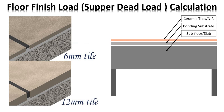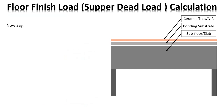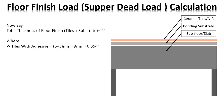Tiles can be used in different thicknesses, and different types of tiles are available. The total thickness of floor finish consists of tiles plus substrate. The substrate is the medium of bonding between the tiles and the floor or slab — it works as a bonding material between tiles and slab.